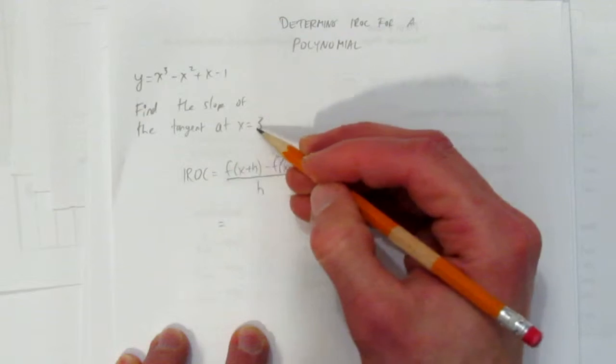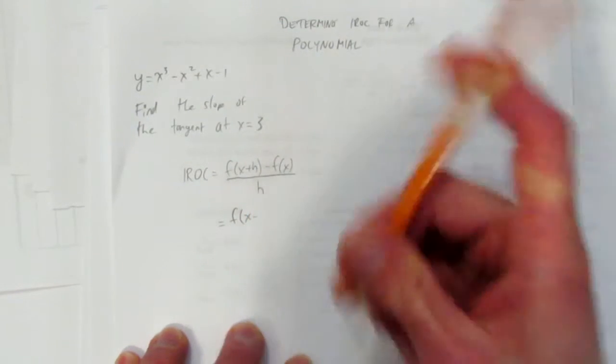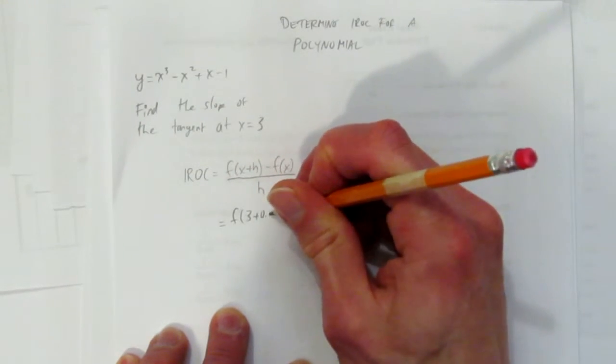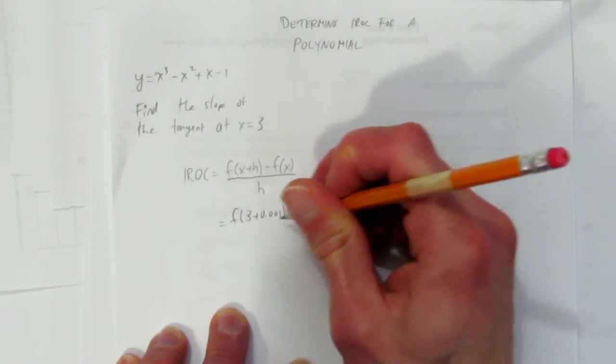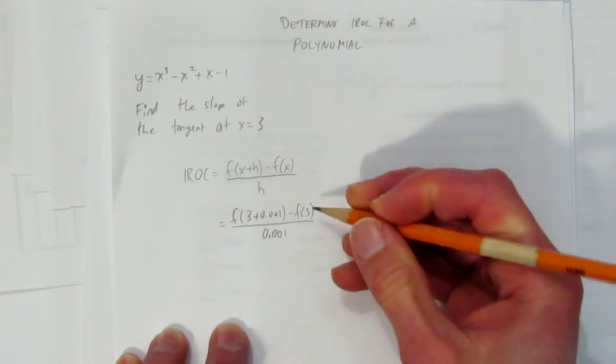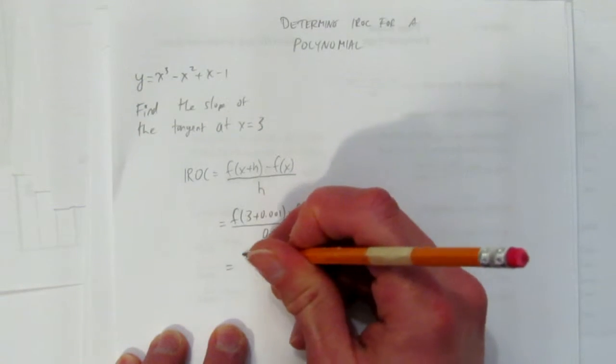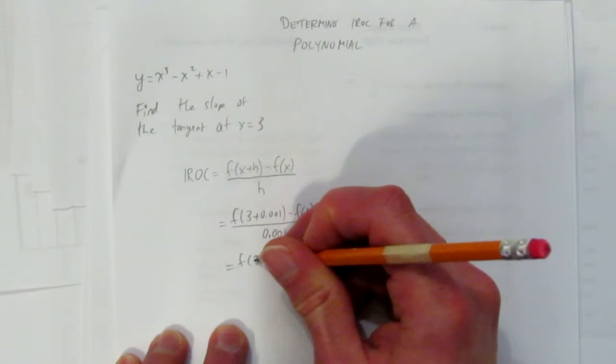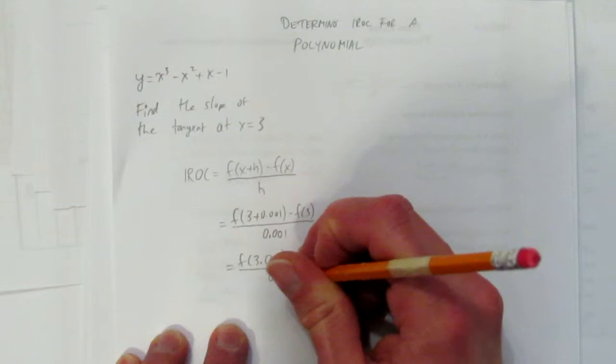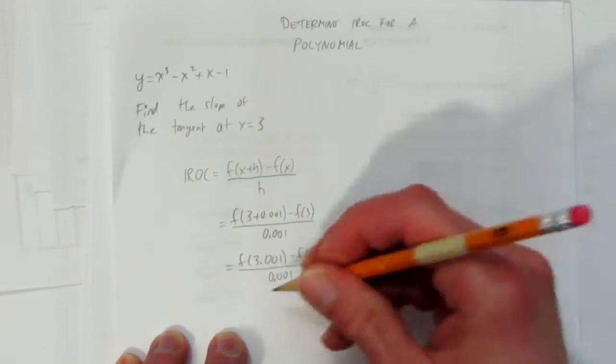We're looking for the slope of the tangent at x equals 3, so we want to know what's f at 3 plus 0.001 minus f at 3, all over 0.001. In advanced functions, that's how we approximate the tangent or the slope of the tangent for a polynomial, or for any function. So really, we're looking at f at 3.001 minus f at 3, all over 0.001. Some people ask me, could you go right from here to here? Sure. I'm just showing it for the video purposes.